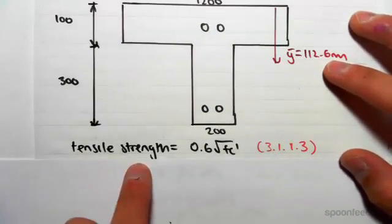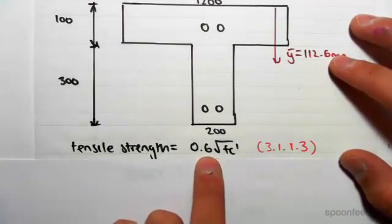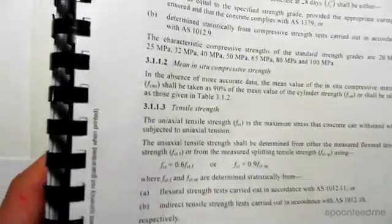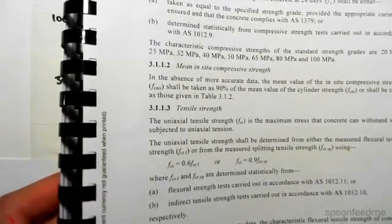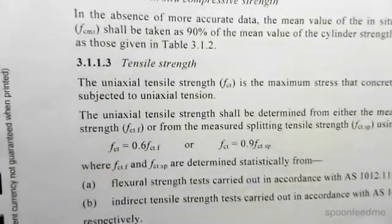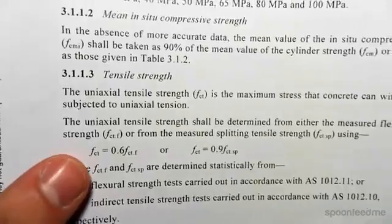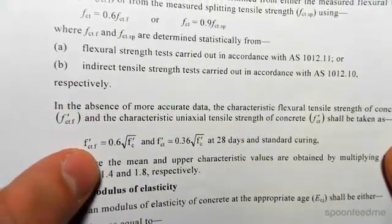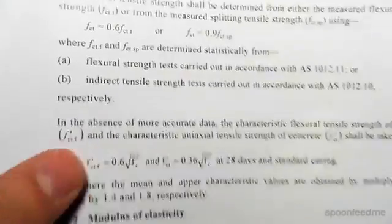First of all, the tensile strength in tension is given as 0.6 root fc dash. That's from section 3.1.1.1.3. So if I show that to you, you can see here tensile strength fct.f dash is 0.6 root fc dash.